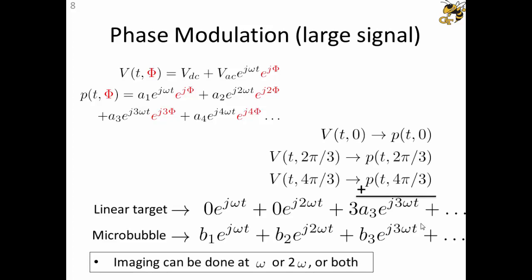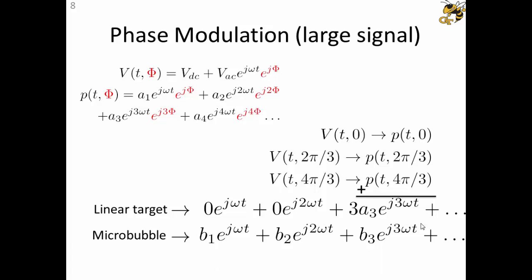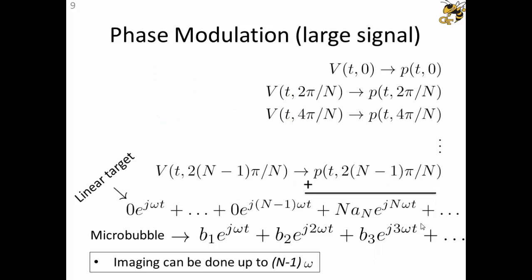Using similar to the small signal case, when we do a three-pulse scheme, the fundamental and the second harmonic can be completely cancelled out from linear target where they will be existing if there's a microbubble. So the imaging can be done at the fundamental or in the second harmonic or both. This can be generalized such that using N pulses, up to the N-1 harmonic can be cancelled out from linear reflectors. We can do the imaging up to the N-1 harmonic of the drive signal.